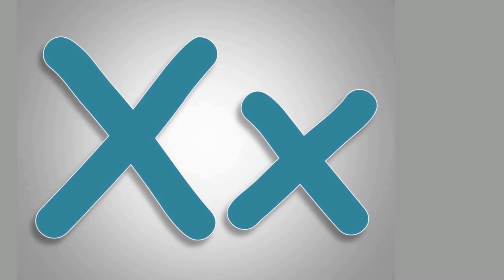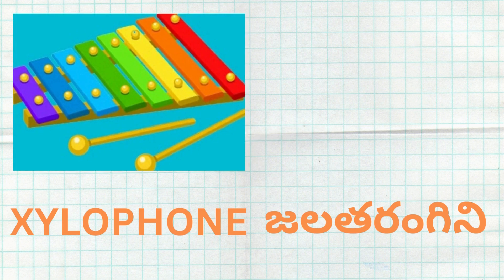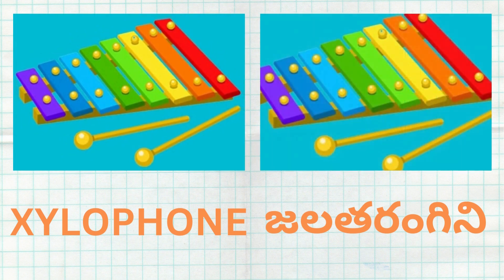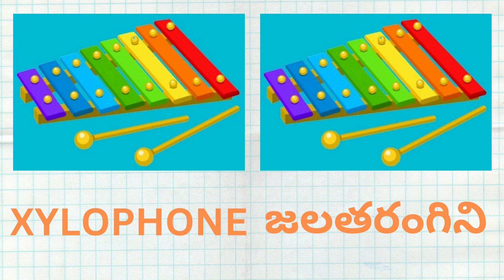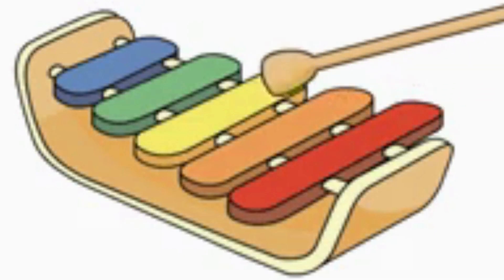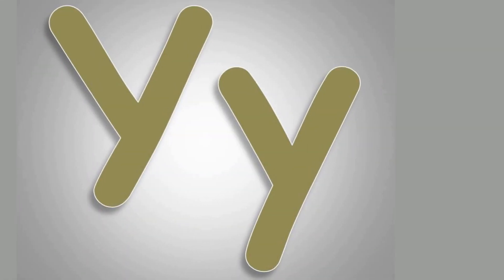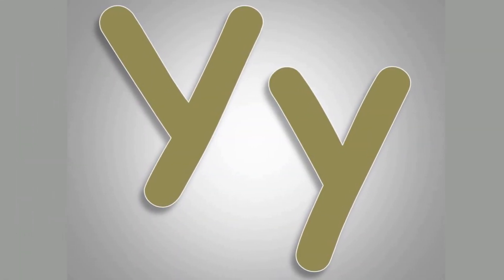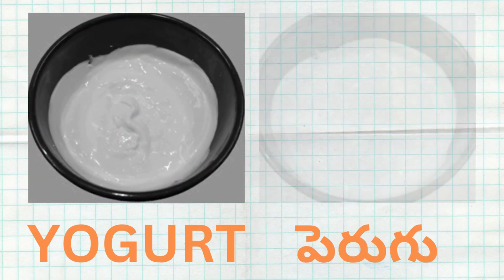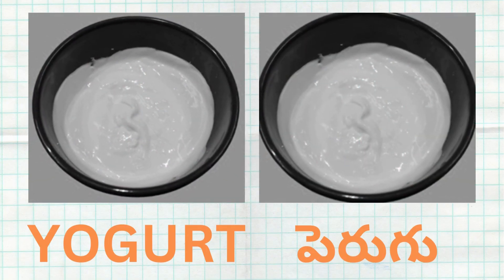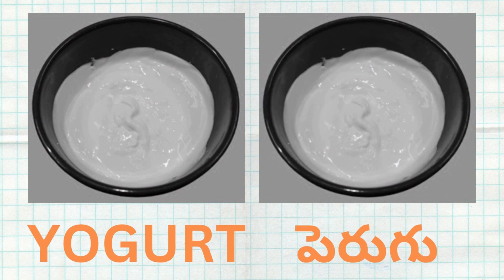X for Xylophone. Xylophone Ante Jalatarangini. Y for Yogurt. Yogurt Ante Pirugu.